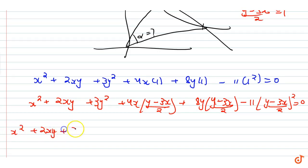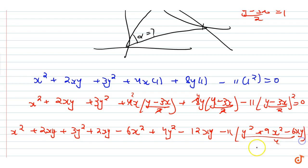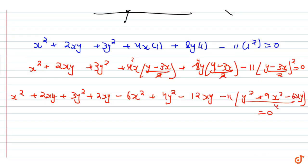Plus 3y² — the 2s cancel. Then we get 4y² − 12xy. Now I open 11·(y² + 9x² − 6xy) divided by 4, that equals 0. Now I will solve this whole equation.